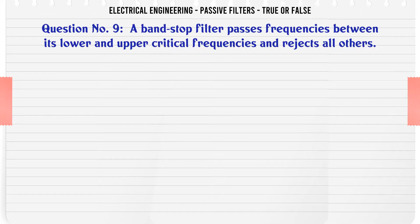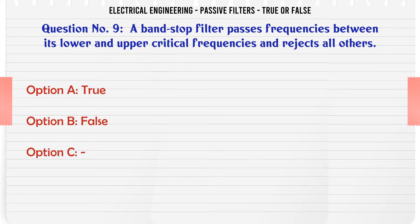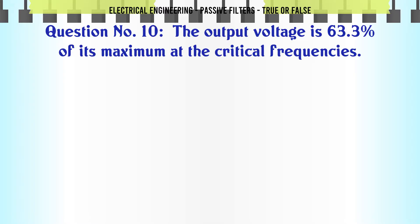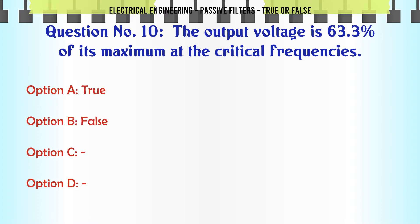A band-stop filter passes frequencies between its lower and upper critical frequencies and rejects all others. A. True. B. False. The correct answer is: False.